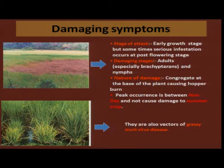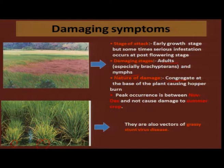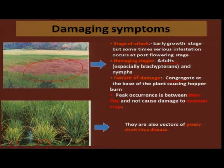Damaging symptoms are very typical in these sucking pests. In the early stage as well as in the post flowering stage they inflict damage; both adults and nymphs cause damage. They congregate at the base of the plant and start sucking on the plant sap. Because of this, the growth of the plant is affected, causing a typical symptom known as hopper burn — as if the entire patch of the field is put on fire, giving a burnt appearance.